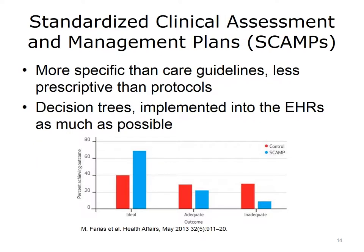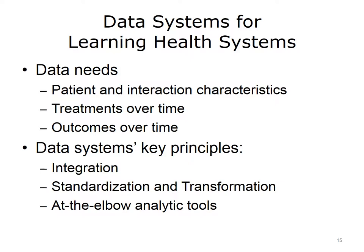Finally, let's look at the work by Boston Children's Hospital to develop standardized clinical assessment and management plans, also known as SCAMP. These plans are more specific than guidelines of care, but less prescriptive than protocols. They're designed by the health system, based on extant knowledge and internal observational studies. At Boston Children's, there are decision trees where each characteristic leads down a different path with different probabilities for outcomes. They attempt to enter these into the EHR, both in terms of what data needs to be collected and to support the SCAMP. Their initial work showed providers liked the decision trees, as they reduced variability and improved outcomes. Heart catheterization outcomes for children are shown, comparing the control period to the post-SCAMP period. The percentage of ideal outcomes grew substantially, and the inadequate outcomes were reduced.